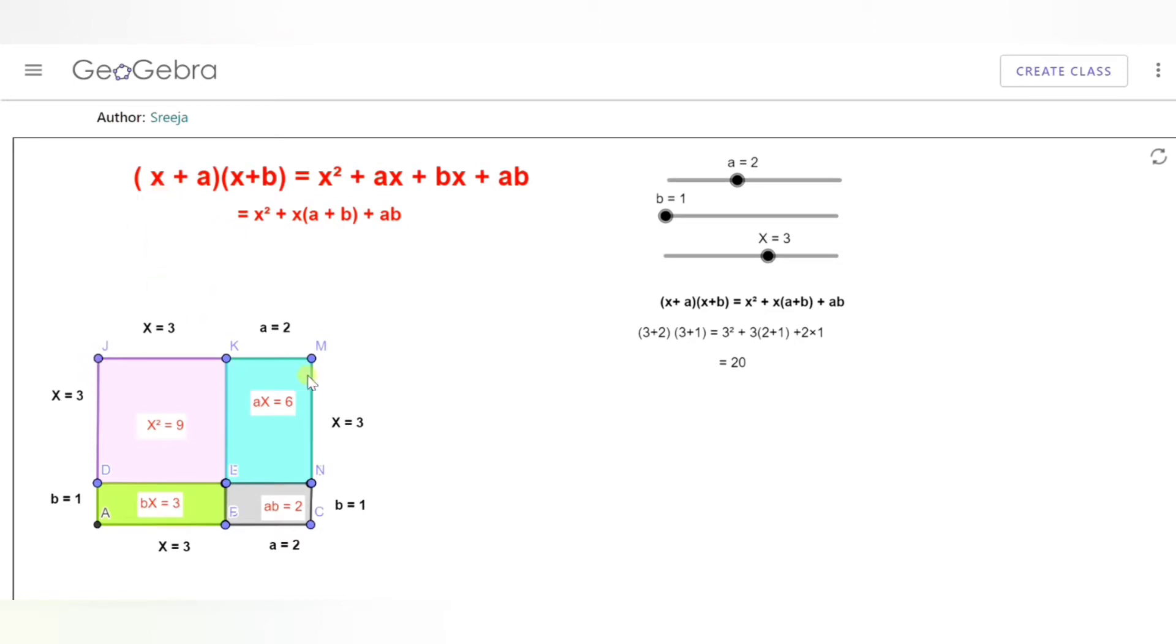If we consider a rectangle of side (x + a) and (x + b), the product (x + a)(x + b) can be found by finding the area of the rectangle.